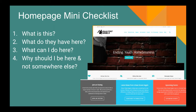Next we get into the homepage mini-checklist. We have four things you should be aware of when it comes to your homepage. For this example we're using Urban Street Angels, a nonprofit here in San Diego that specializes in getting homeless youth the resources and relationships they need to get off the streets and change their life. When a brand new website visitor comes to your homepage, the number one thing they need to be able to answer is: what is this? Right away on Urban Street Angels it says 'Ending Youth Homelessness' — immediately the visitor knows what the nonprofit is about.